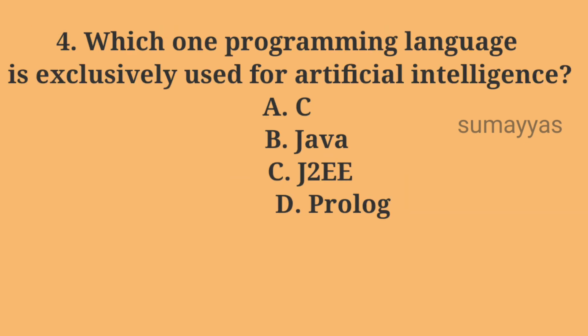Question number four: which programming language is exclusively used for artificial intelligence? Option A: C. Option B: Java. Option C: J2EE. Option D: Prolog.